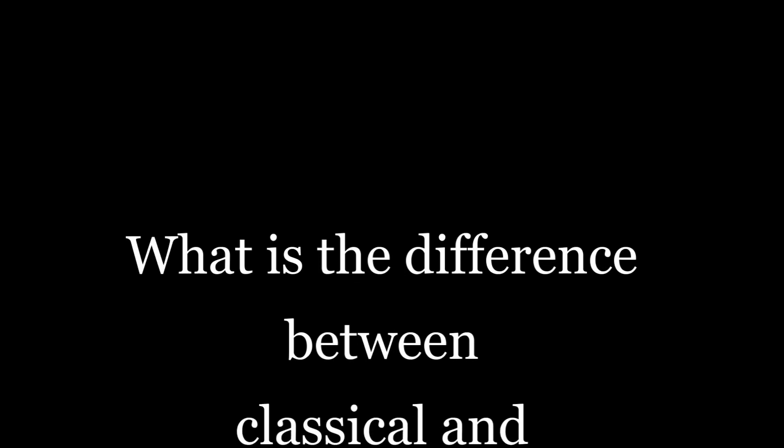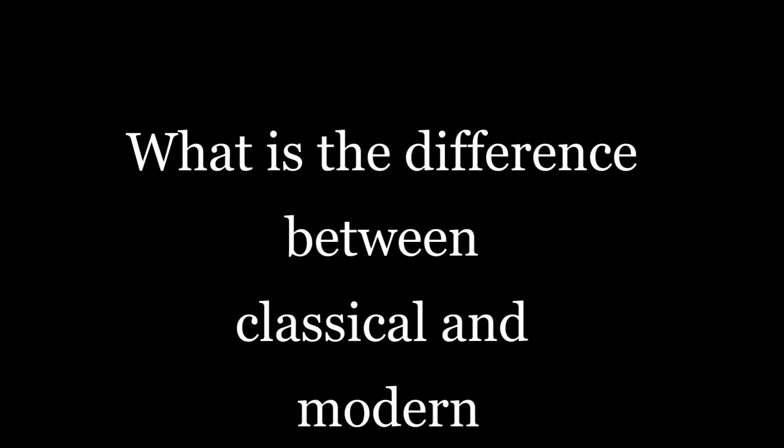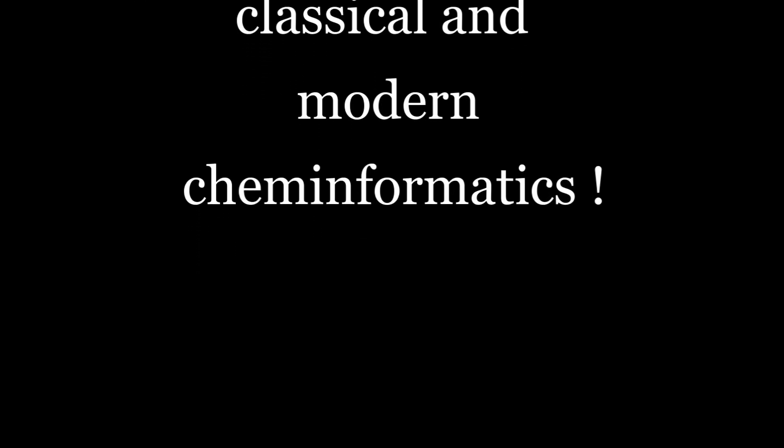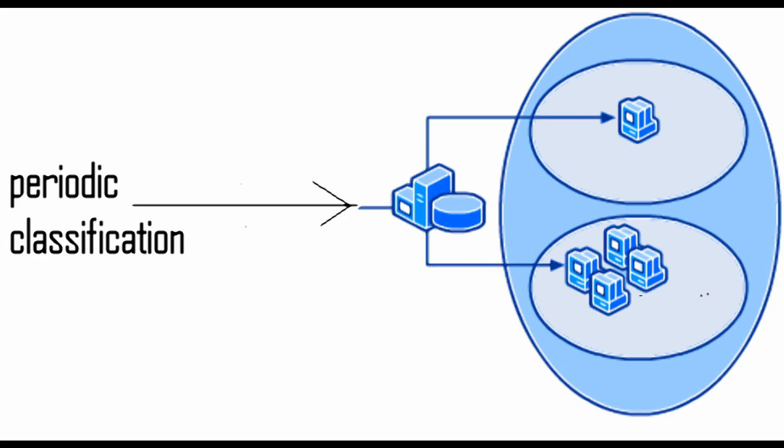What is the difference between classical Cheminformatics and modern Cheminformatics? When Mendeleev developed the periodic table, the number of elements was very less. Later, the number of elements increased, and then compounds also increased. So it is not easy to make a decision about a compound by simple columns and periods. That means we required advanced information technology tools in order to classify the compounds.